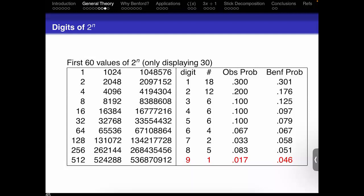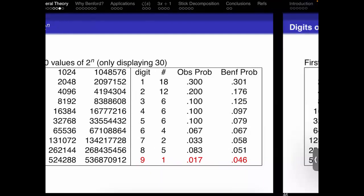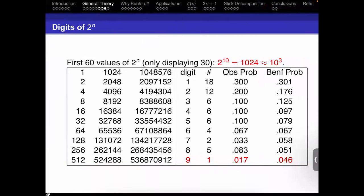Here is a key observation: 2^10 = 1024, which is approximately 10^3. How many megabytes are in a gigabyte? It should be a thousand if you go by what 'mega' and 'giga' mean, but it's actually 1024.